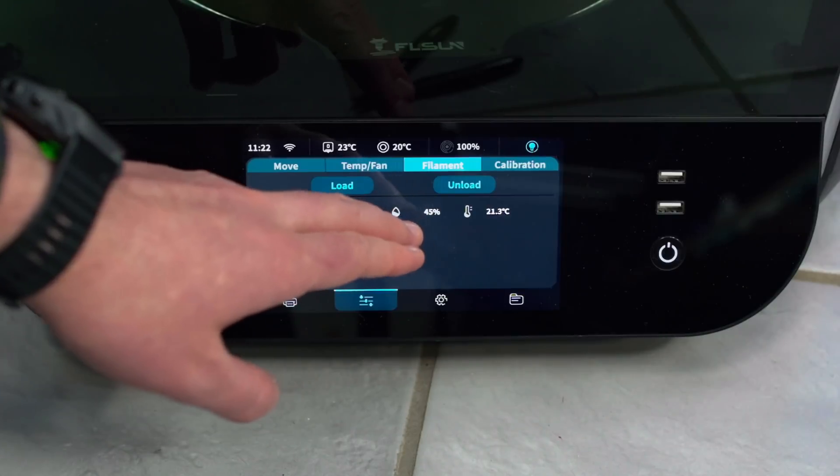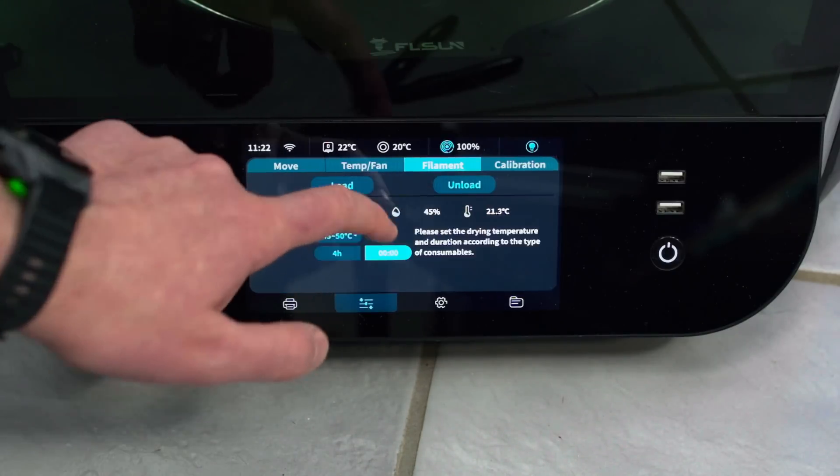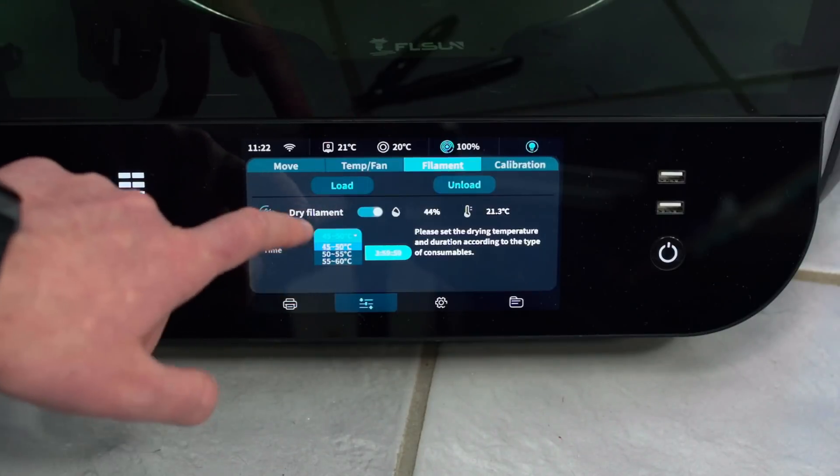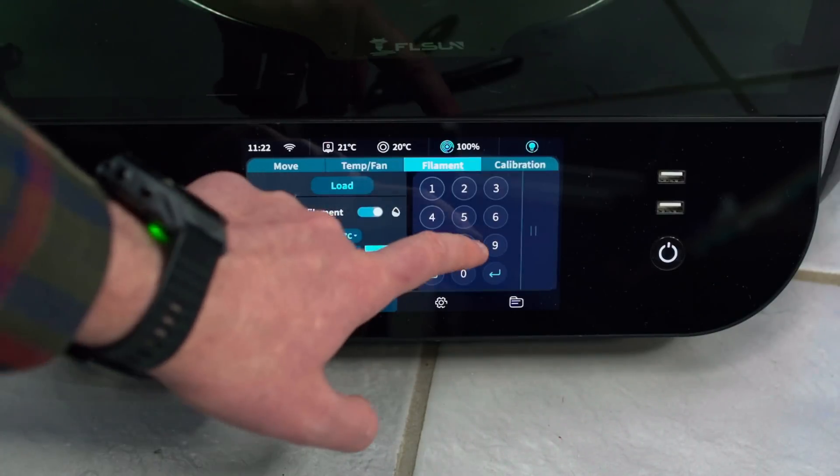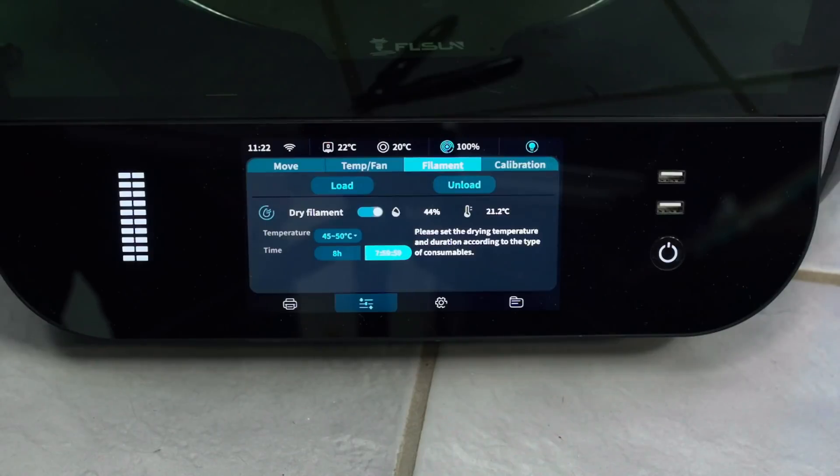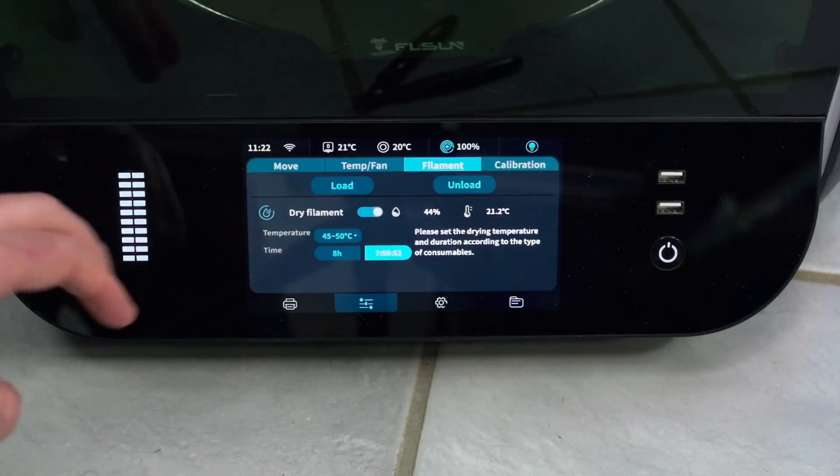So on the printer's screen, it gives you a relative humidity percentage and the temperature inside that chamber. You can turn on the active filament dryer, set a temperature range, and even adjust the time. Turn it up to 8 hours and it will dry for the next 8 hours that this printer is on. Whether you're printing or not, it keeps this timer going. That's a really cool feature that's not on most other printers.